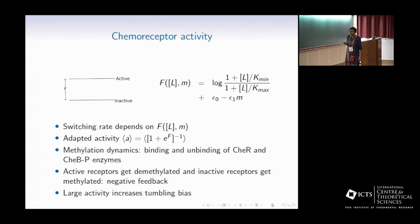This methylation acts as some kind of a negative feedback. When the activity is large, then the tumbling bias is large. If the ligand concentration L is large, then the free energy becomes large, activity becomes small, tumbling bias becomes small, and smooth runs are possible.